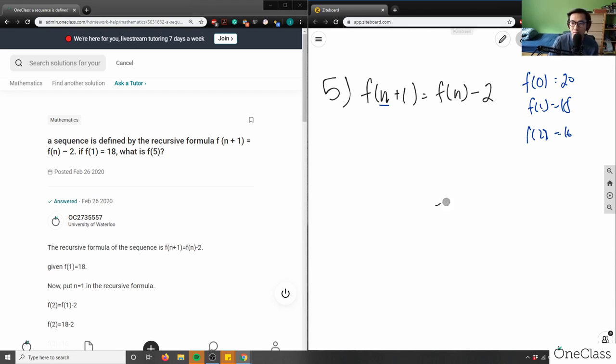So if I found f(2), let's do f(3). So f(3) would mean the n here would have to equal 2. So it would equal f(2) minus 2. So f(3) equals f(2) is 16 as depicted here, minus 2. f(3) equals 14. So I have f(3) equals 14.